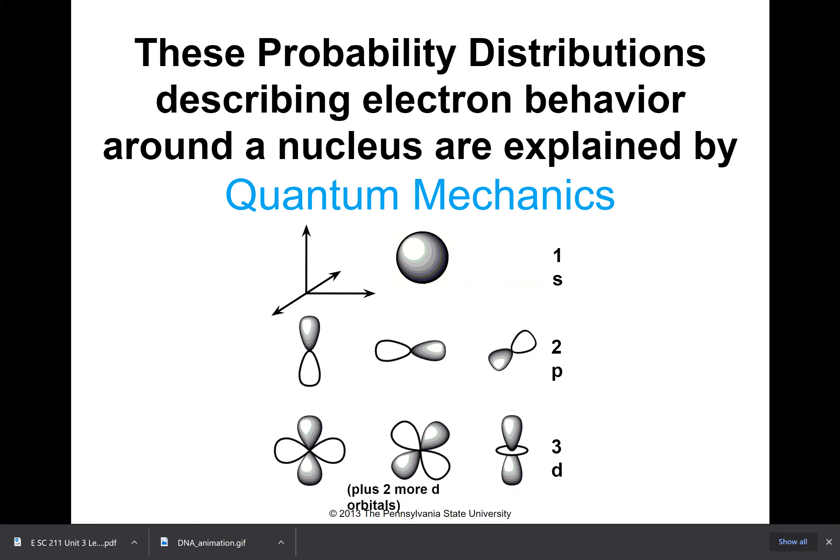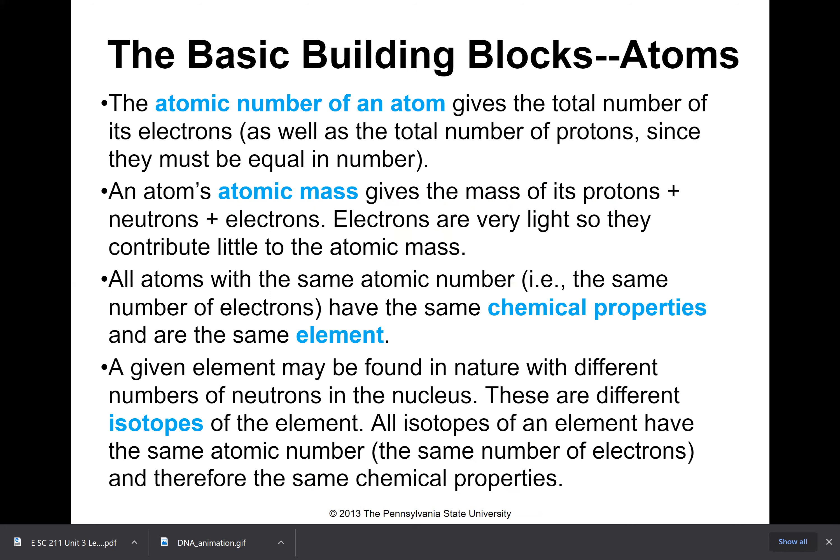The atomic number of an atom gives the total number of its electrons and protons because they're equal. An atom's atomic mass gives the mass of its protons plus neutrons plus electrons. Electrons are very light so they hardly contribute anything to the actual atomic mass. All atoms with the same atomic number—that means the same number of electrons and protons—have the same chemical properties and are the same element.